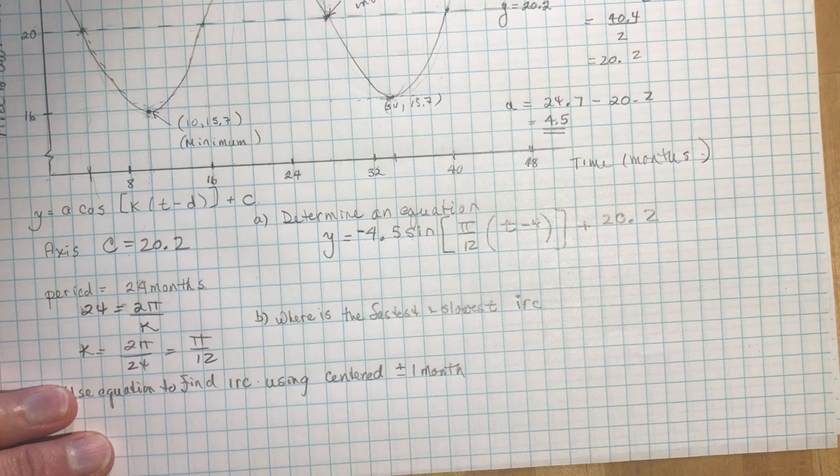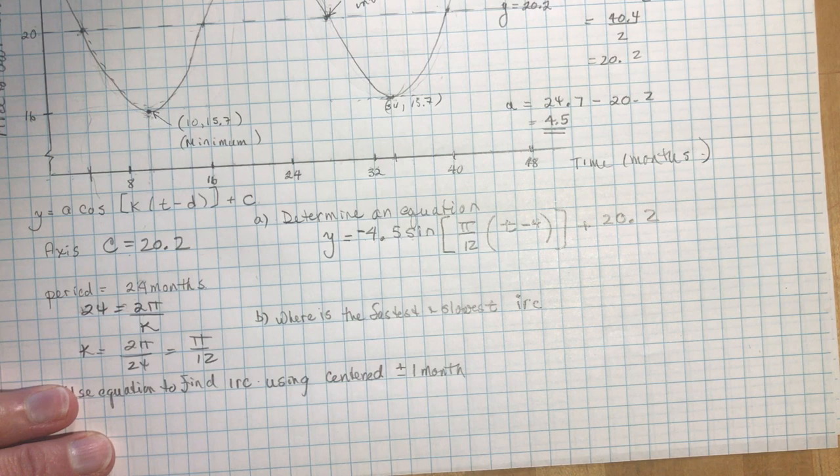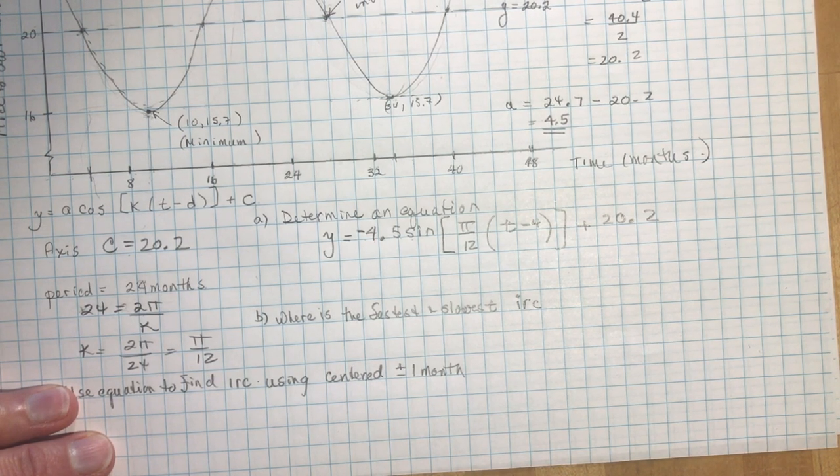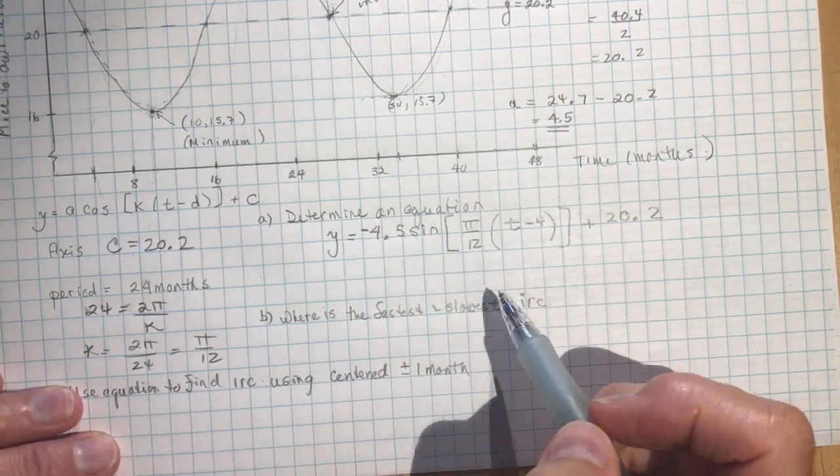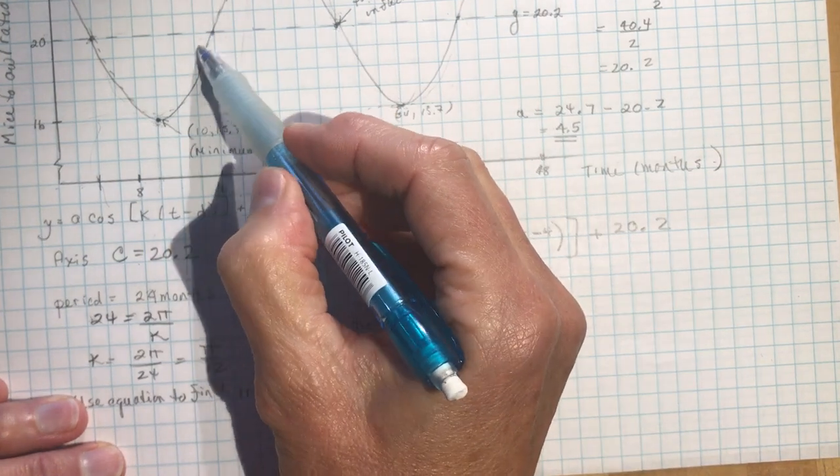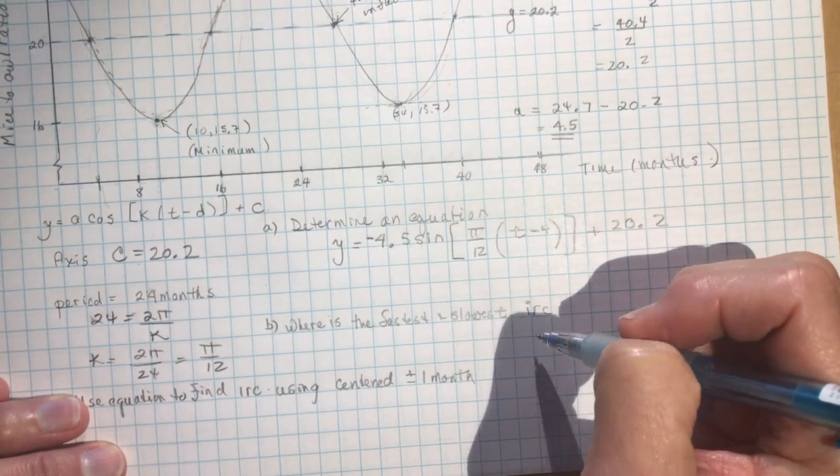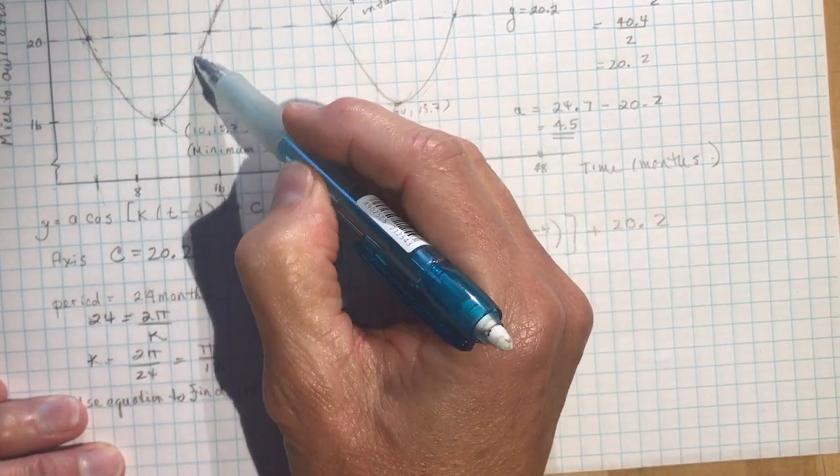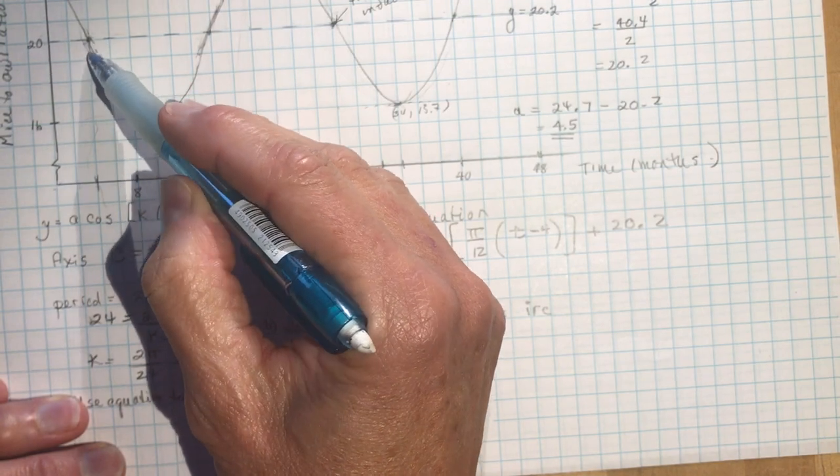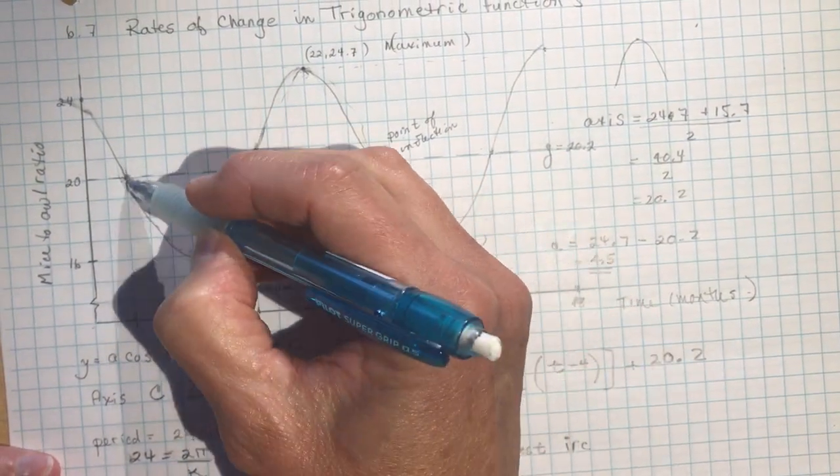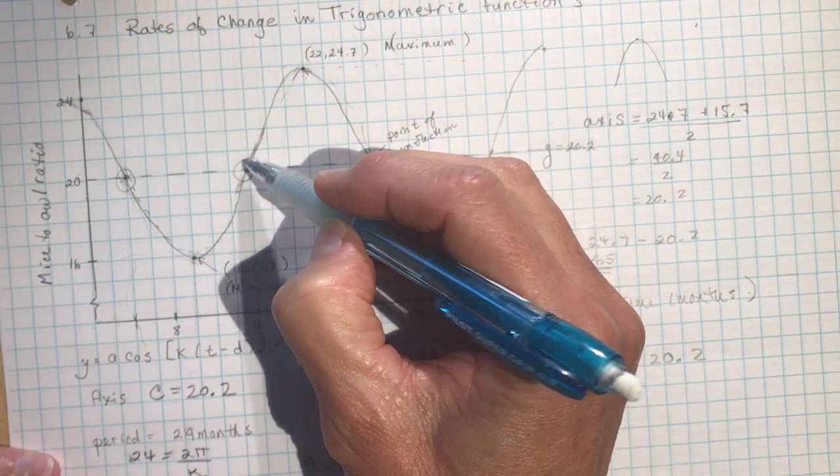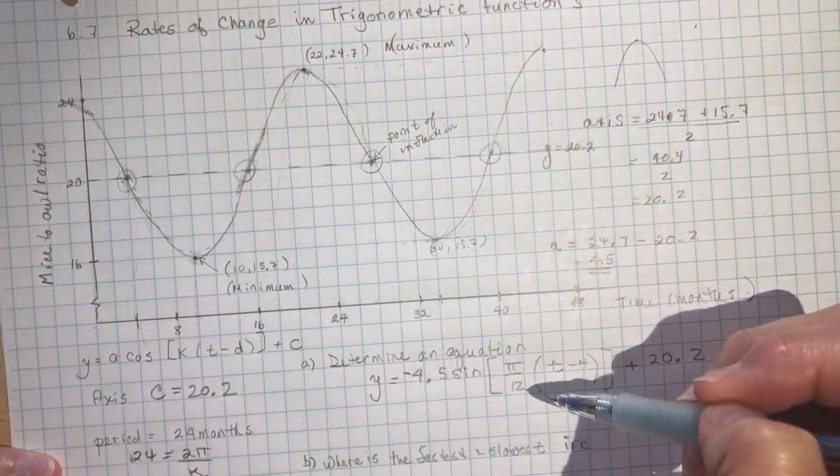Question B says, I'll read it right from the book, use the curve to determine when the ratio of mice per owl has its fastest and slowest instantaneous rates of change, so the fastest rates of change are going to happen on the axis here, that's where your tangent lines would be the steepest, so the fastest rate of change, so it's decreasing here and increasing here, right, if it's negative it's decreasing, if it's positive it's increasing, so the fastest are going to be here at all of these circle points.